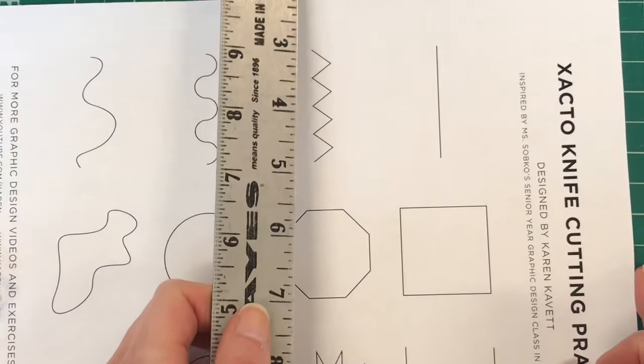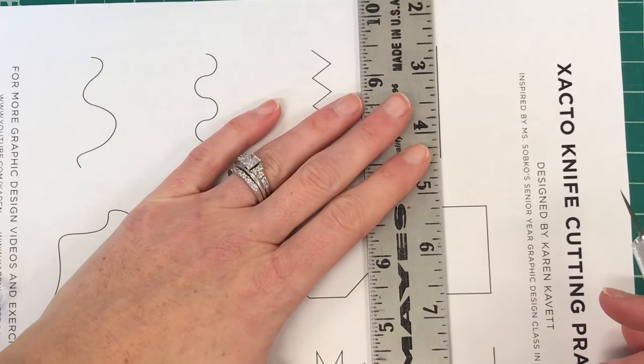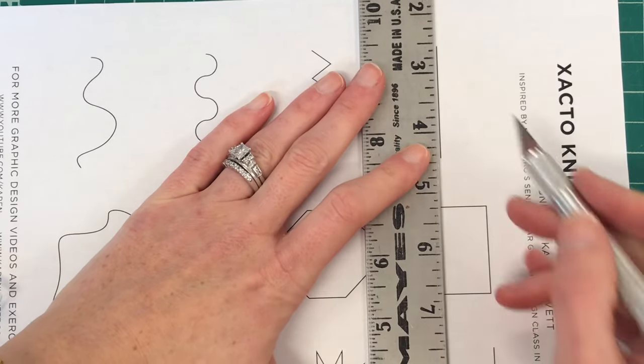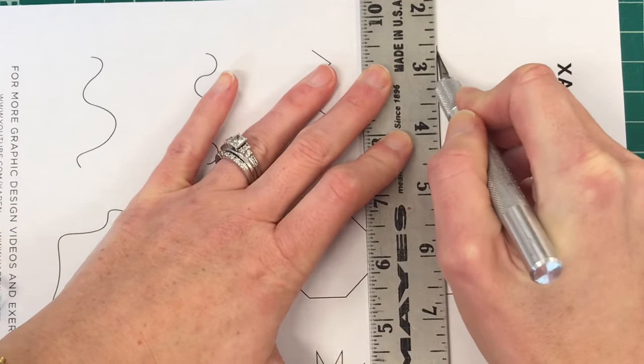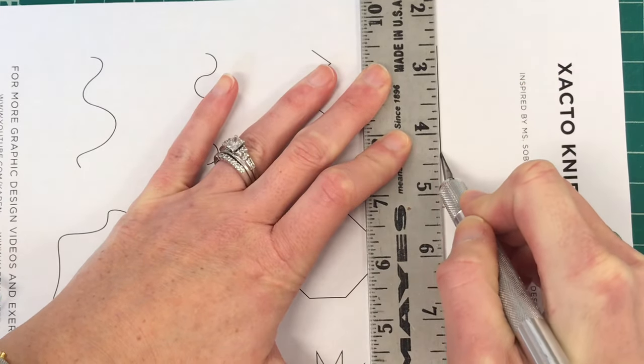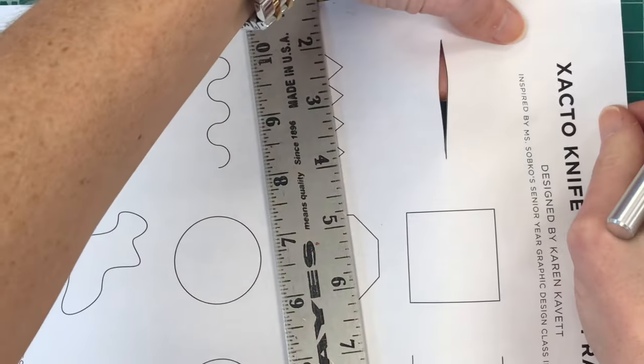I prefer to turn my paper so that I'm always pulling my knife toward me. For some reason that's comfortable for me. Also you can use a ruler to help you cut a straight line if you find that you have trouble doing a straight line without a ruler.